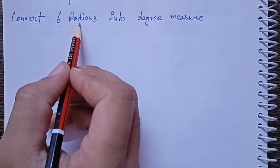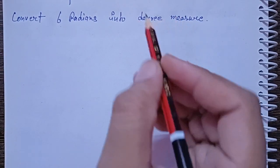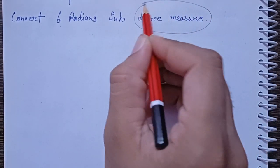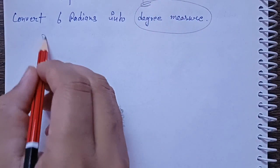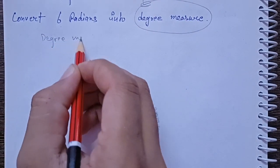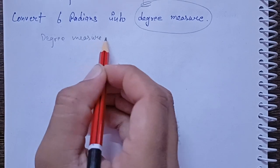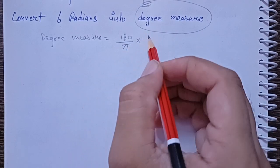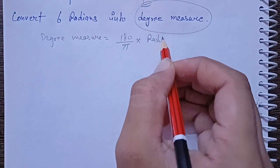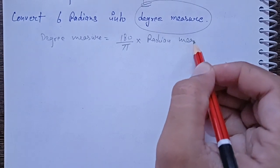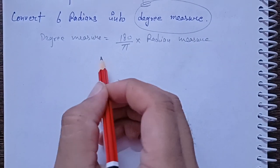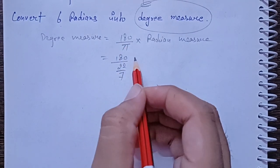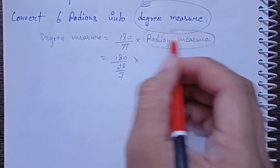Convert 6 radians into degree measure. We have to convert radians into degree. Apply the formula: degree measure is equal to 180 divided by pi, multiplied by the radian measure. Pi value is 22 by 7, and the radian measure is 6.